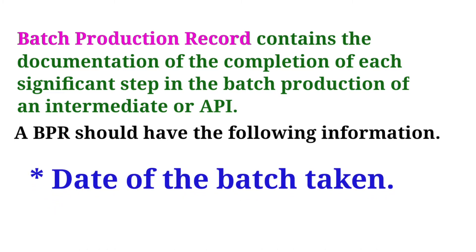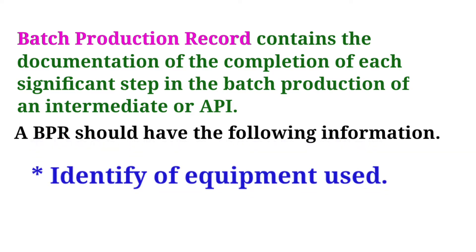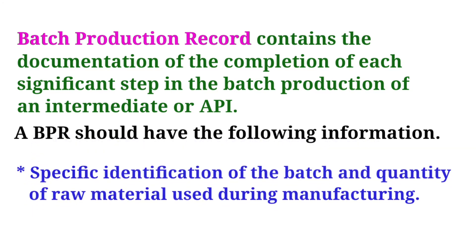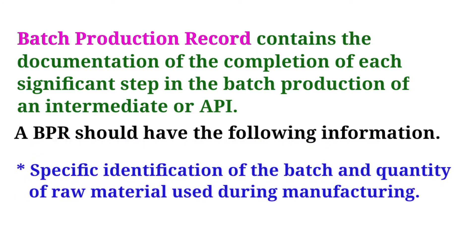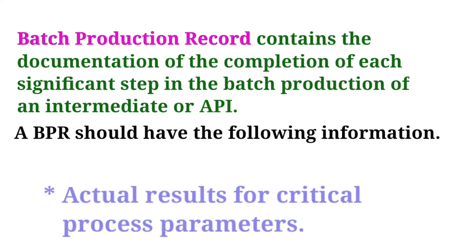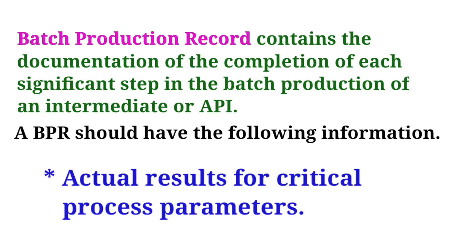Date of the batch taken. Identity of equipment used. Specific identification of batch and quantity of raw material used during manufacturing. Actual results for critical process parameters.